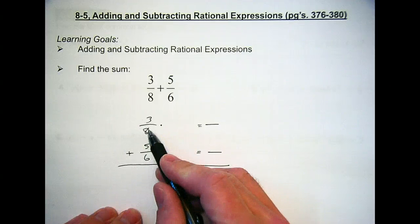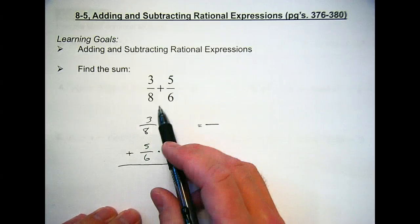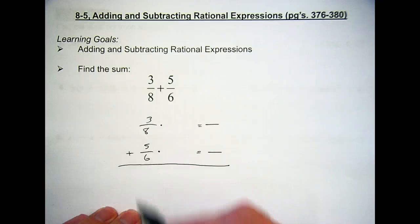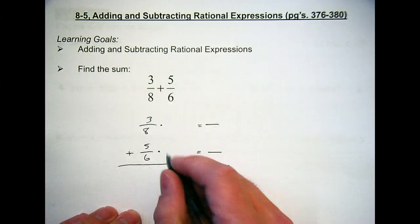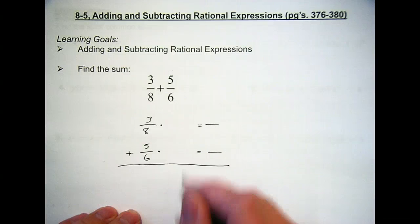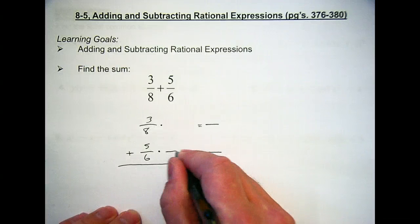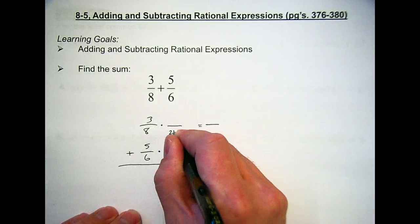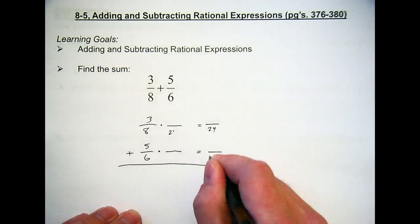Always try to reduce your fractions first — just keep that in mind, it'll save you time. We can't reduce these, but we need to find a common denominator. What do 6 and 8 both go into? 24.